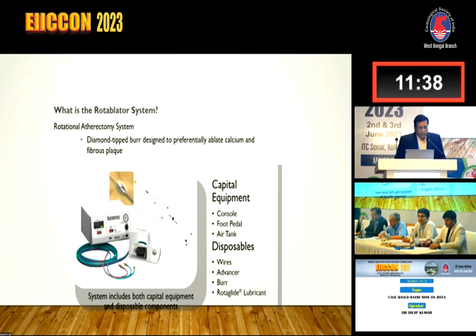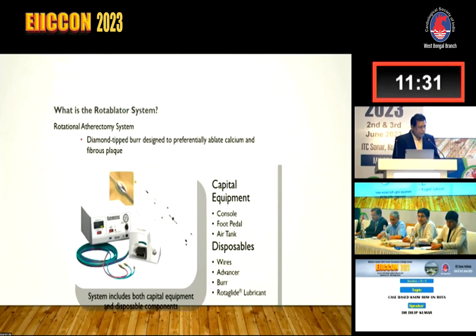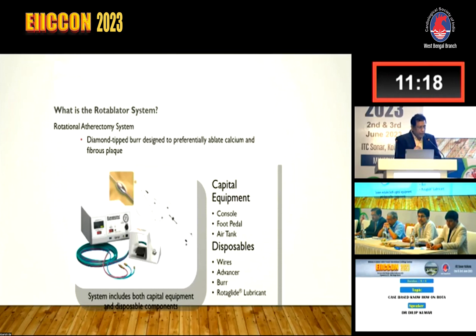Let's get familiar with the rota ablation system. We now have rota pro as well as the original rota link which we've been using for the last seven to eight years. Both have a console, an advancer, and a paddle. In rota pro, there is no paddle - on the advancer there is a knob which you activate to start rota ablation, and push again to stop. Everything is under your control in rota pro.